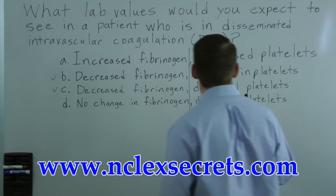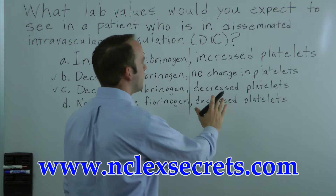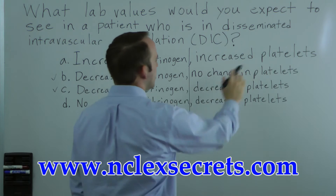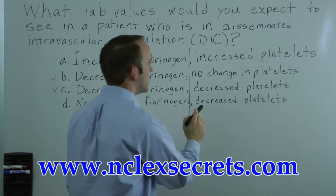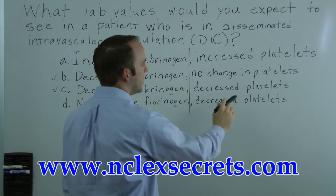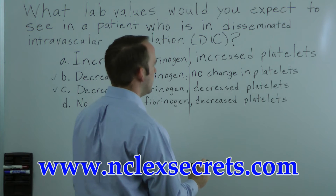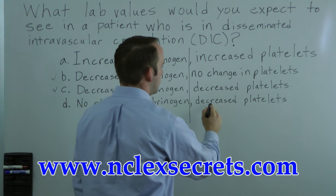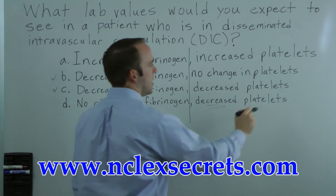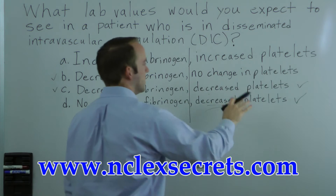Now let's look at the second section. Ignoring the first for a moment, we have increased platelets, no change in platelets, decreased platelets, and decreased platelets. So those two decreased platelets choices would be the ones with the majority of the responses.